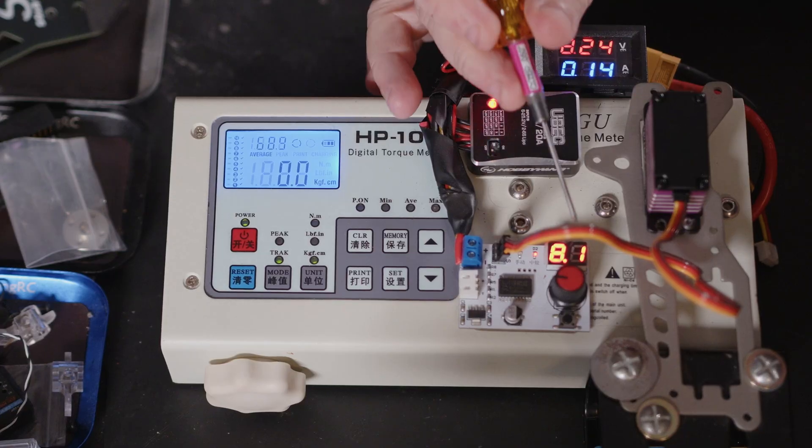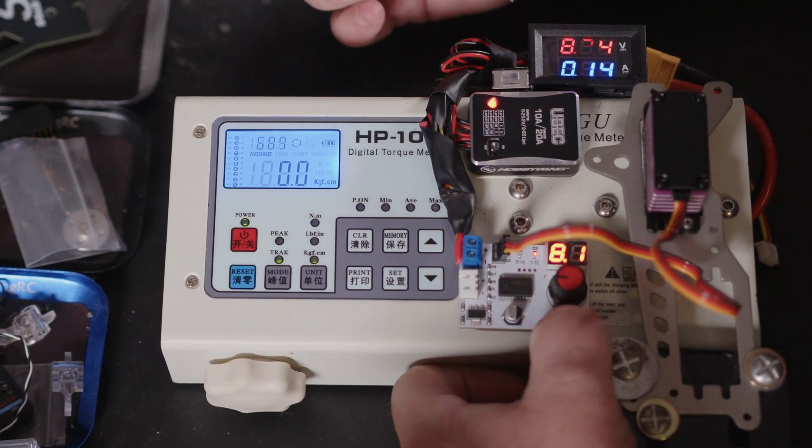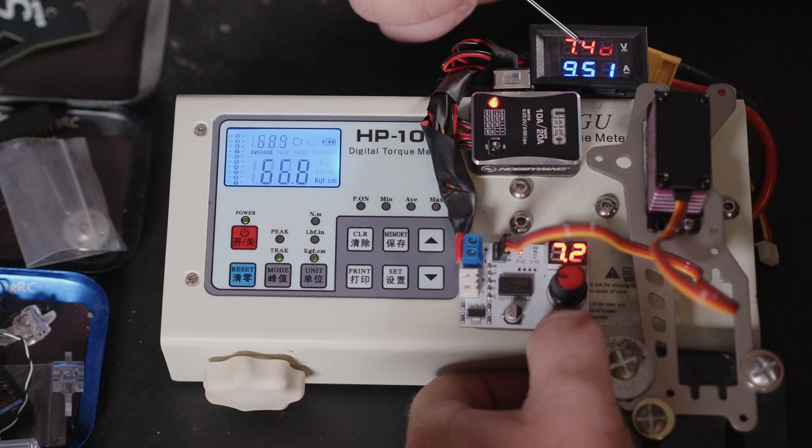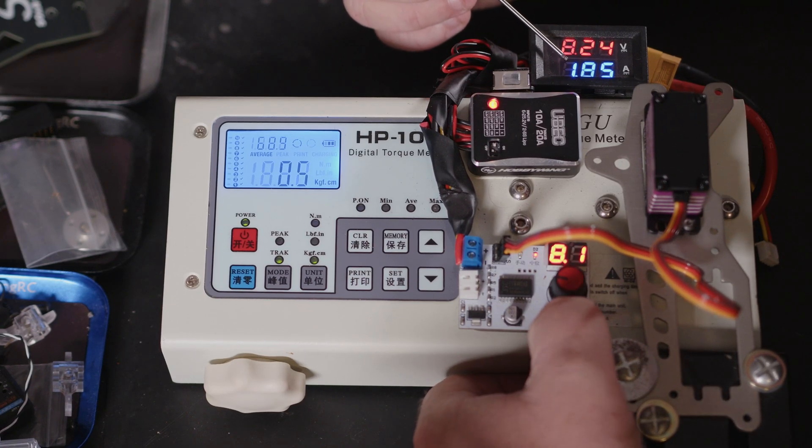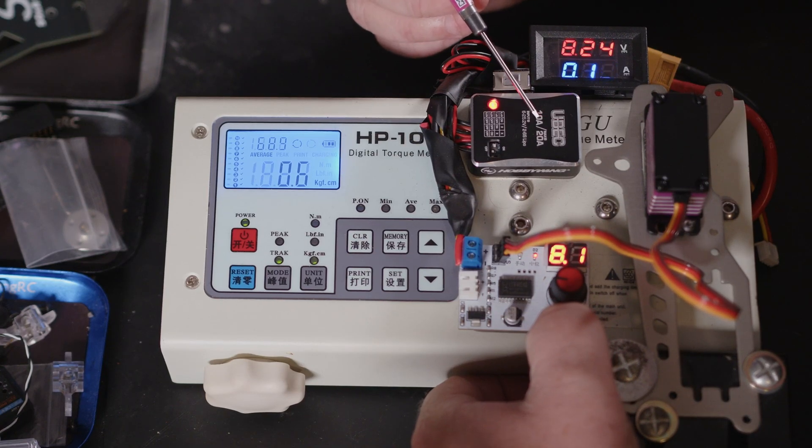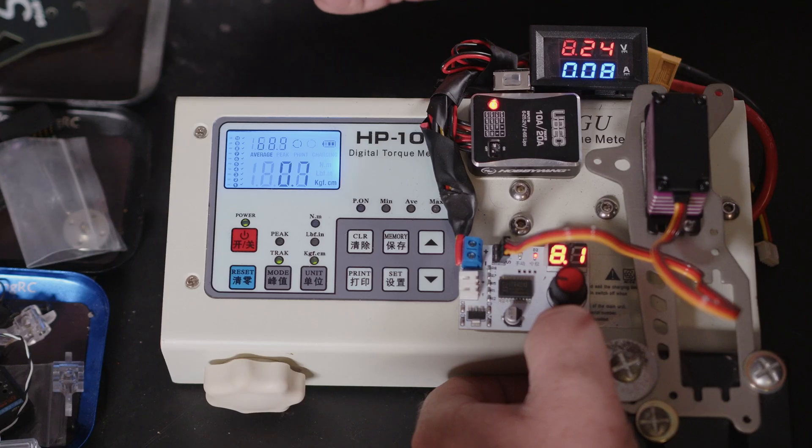We're not getting 8.4 volts. If we put it under load, we're dropping down to just over seven and a half volts, so we're almost one volt down. We're hitting 10 amps. This BEC is 10 amp constant, 20 amp max. We shouldn't be getting this much voltage drop.